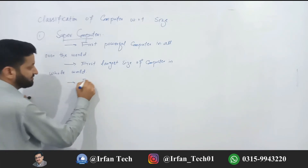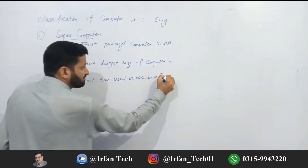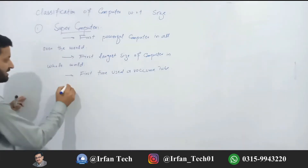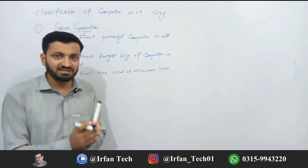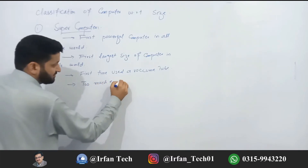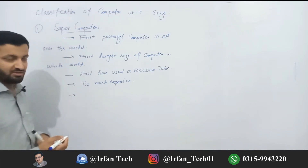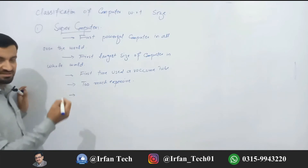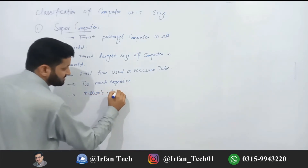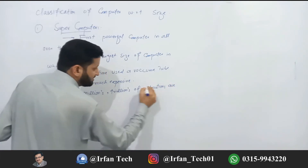The supercomputer is the first and largest in size of computers in the whole world. It was first used with vacuum tubes. The size of the computer was very large and the expense was the highest — too much expensive. It can execute millions and trillions of instructions.